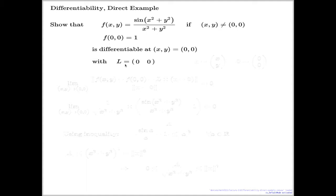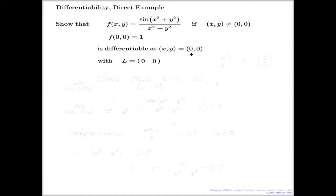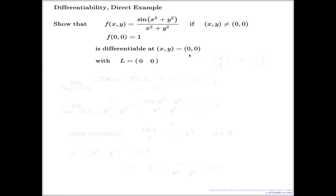So I claim that the function is differentiable at the origin, and I give the choice for the derivative matrix. This time it's a matrix one by two, it's a row matrix, and the matrix will be the trivial zero matrix.